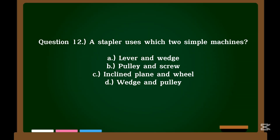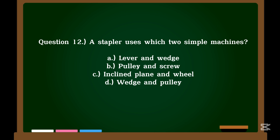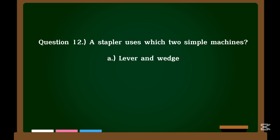Question 12. A stapler uses which two simple machines? A. Lever and wedge. B. Pulley and screw. C. Inclined plane and wheel. D. Wedge and pulley. Correct answer: A. Lever and wedge.